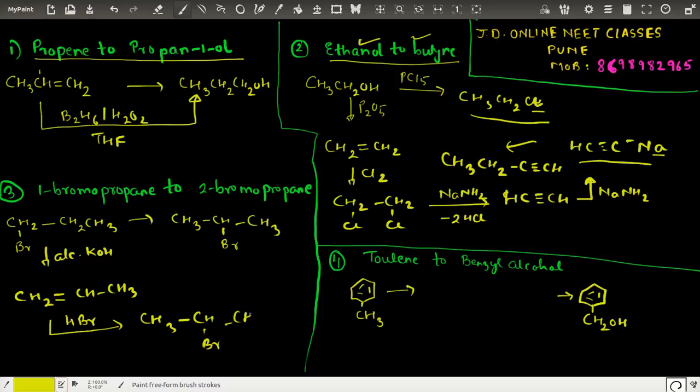It was a simple straightforward conversion. Then the next one is toluene to benzyl alcohol. Now remember we have a reagent which is NBS. NBS is used for brominating at the allylic positions. Allylic position means carbon double bond carbon, and the carbon adjacent to that.